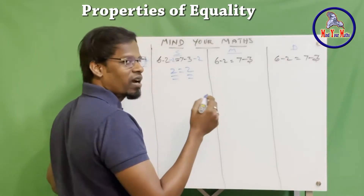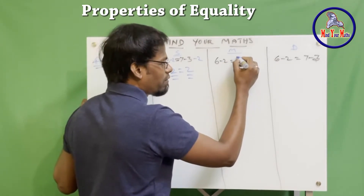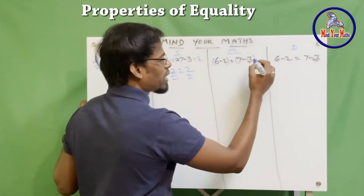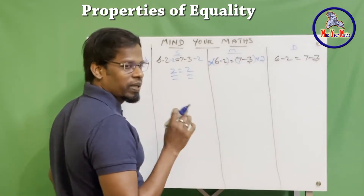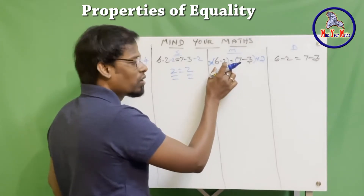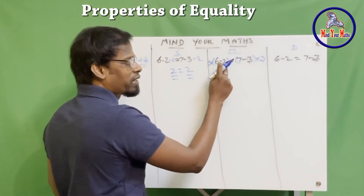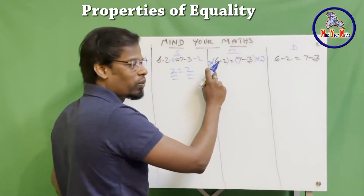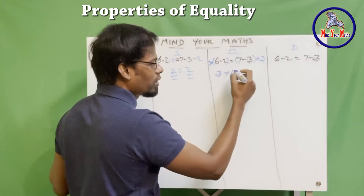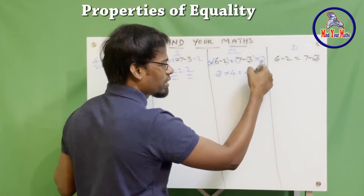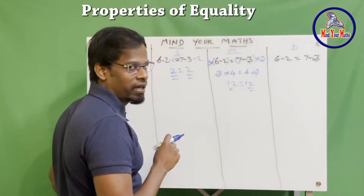Now let's come to multiplication. When it comes to multiplication, we have to take the whole left-hand side and the whole right-hand side as a single value. Whenever you are multiplying, you multiply the whole number. Let's multiply by 3 on both sides. To simplify the bracket, one way is: 6 minus 2 is 4, and 4 times 3 is 12. Similarly, 7 minus 3 is 4, and 4 times 3 is 12. So 3 times 4 equals 12 on both sides — the equality is maintained. This is one way of simplifying.